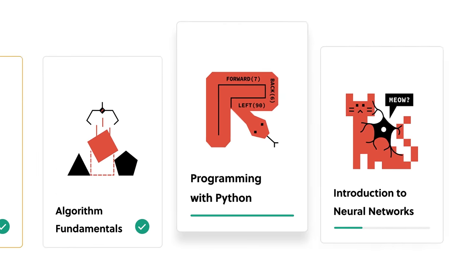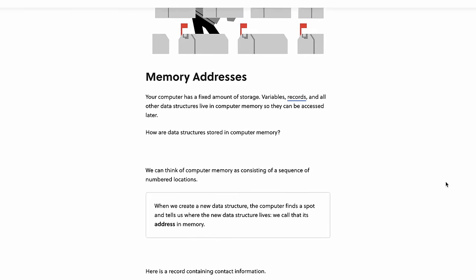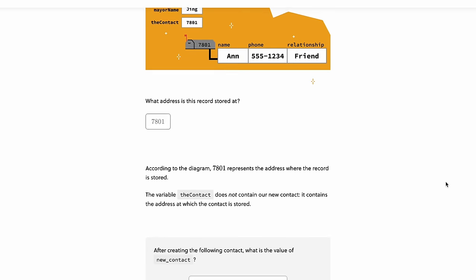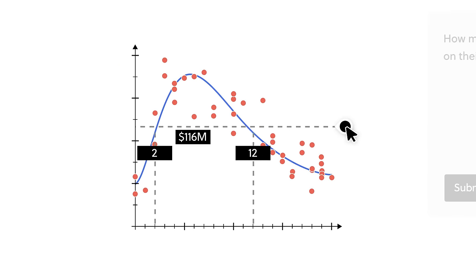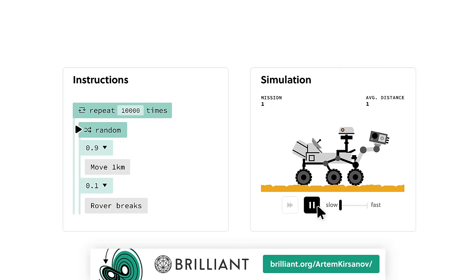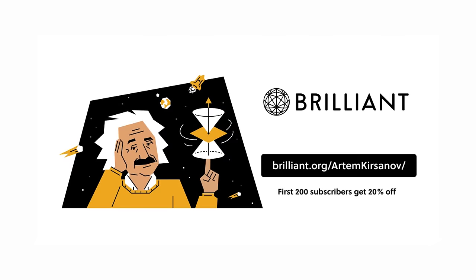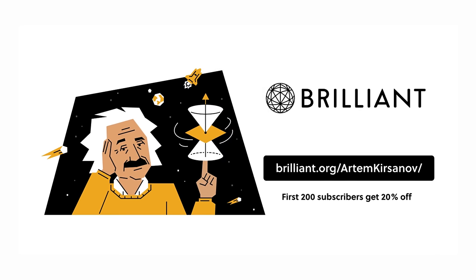Whether you're a student, a professional or just someone who loves to learn, they have something for everyone. For example, if you enjoyed this video, you may be interested in Brilliant's newly released course on Algorithms and Data Structures, which explores how memory is organized and allocated inside computers. Don't miss out on this opportunity and take your learning to the next level. Go to brilliant.org slash Artem Kirsanov to get a 30-day free trial of everything Brilliant has to offer. And the first 200 people to use this link will get 20% off the premium membership.